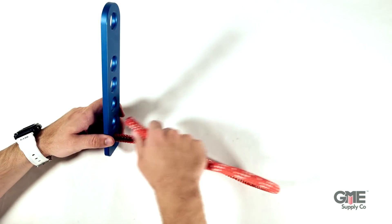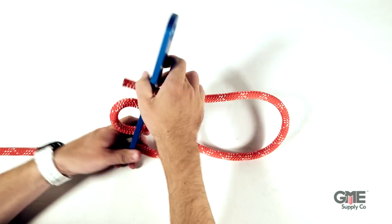First feed about three feet of rope through hole one and weave that rope upwards through each hole until you reach hole five.